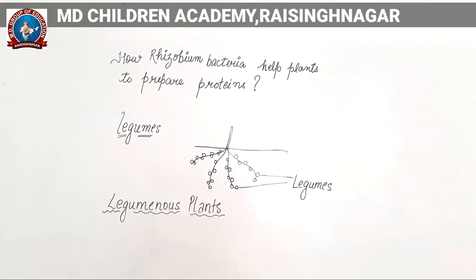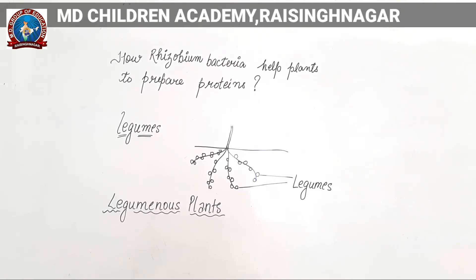Some examples of leguminous plants are pulses, cereals, and grains — these are plants whose roots have legumes present. Inside the legumes, rhizobium bacteria are present. This bacteria will again change the atmospheric nitrogen into a suitable form, just like blue-green algae. Then that form is absorbed by the plants through roots, along with water. And then that nitrogen is used to prepare proteins.